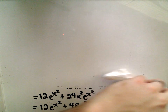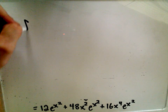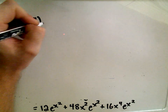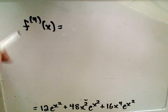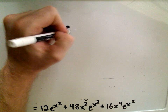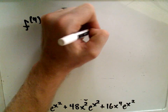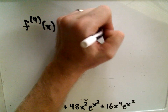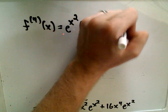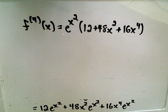So this is our fourth derivative. I'm going to rewrite it one more time — notice there's an e^(x²) everywhere, so I can factor that out. The fourth derivative at x equals e^(x²) times (12 + 48x² + 16x⁴). That's my fourth derivative.